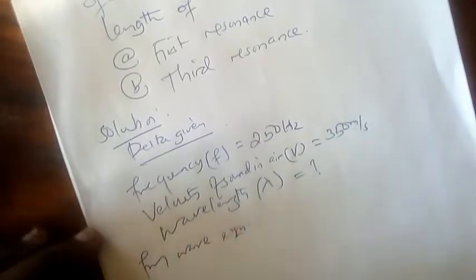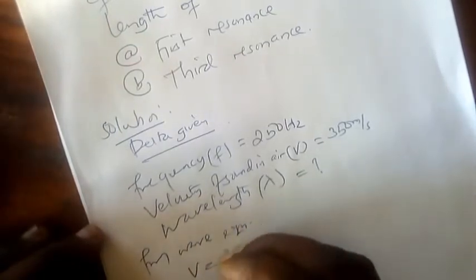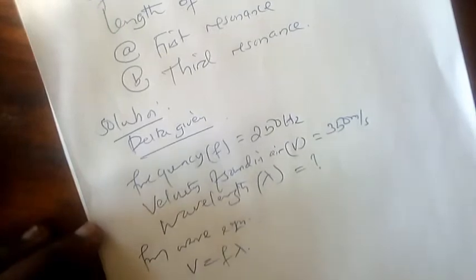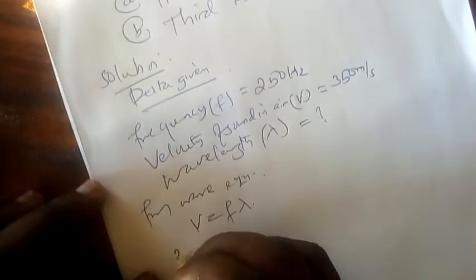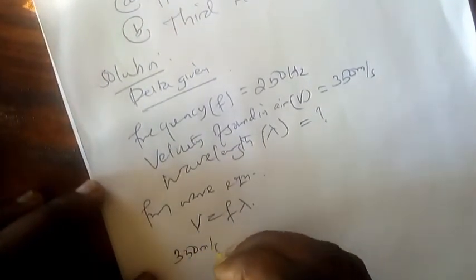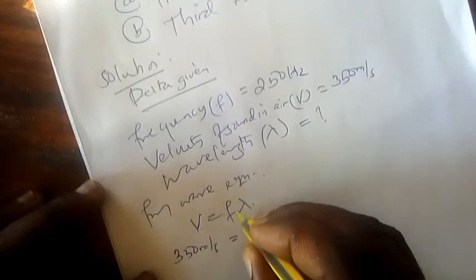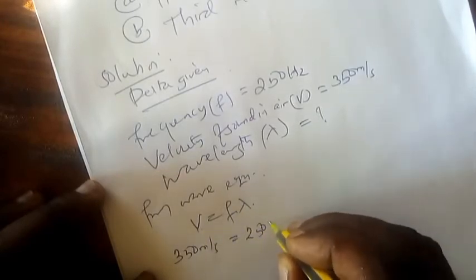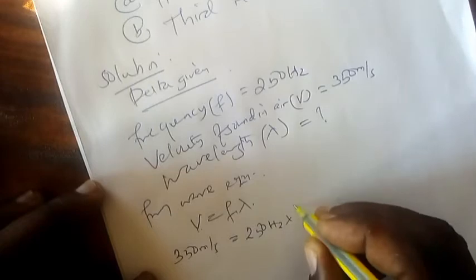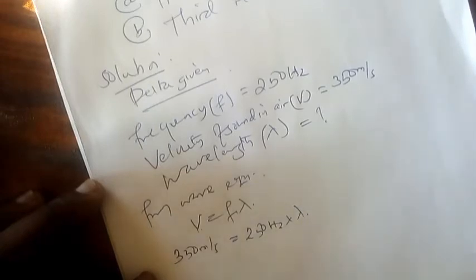From the wave equation it says that v equals frequency times wavelength. We already have this: 350 m/s. We have frequency: 250 Hz. We multiply by wavelength. Once we get this, it will be easier for us to substitute into first resonance and third resonance formulas.